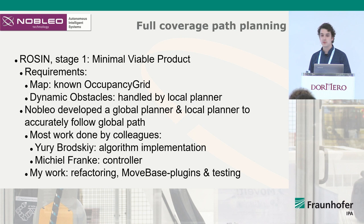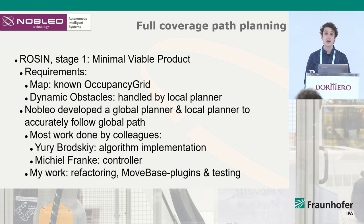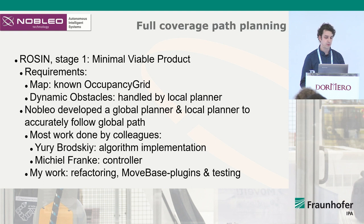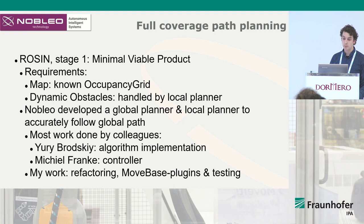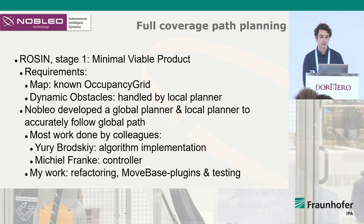For ROSIN we developed a minimal viable product, just past stage one. The main requirements were to have the map known as an occupancy grid in ROS, no dynamic obstacles — which is typical for the environments we use it in — with any obstacles handled by the local planner. We developed a global planner that does full coverage and a local planner to accurately follow the global path. I am mostly presenting work done by colleagues Juri Brodsky, who developed and implemented the algorithm, and Michiel, who is currently working for ASML as a control engineer. My work has mostly been refactoring, making plugins for MoveBase in ROS, and writing some tests.